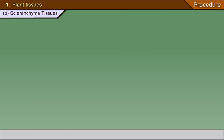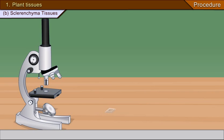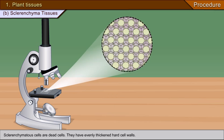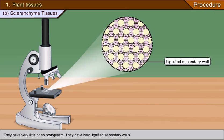B. Sclerenchyma tissues: Sclerenchyma cells are dead cells. They have evenly thickened cell walls, very little or no protoplasm, and hard lignified secondary walls.